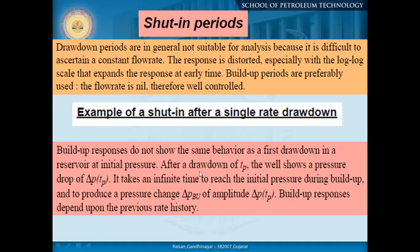After a drawdown of t_p — production time — the first buildup and subsequent buildups may not be the same. It takes an infinite time to reach the initial pressure during buildup, producing a pressure change delta-P_BU of amplitude delta-P_u(t_p). Buildup response depends upon the previous rate history — how much and at what rate you produced and how long. So t_p is very important, and subsequent buildup tests after a lot of production generally cannot be the same as the first.